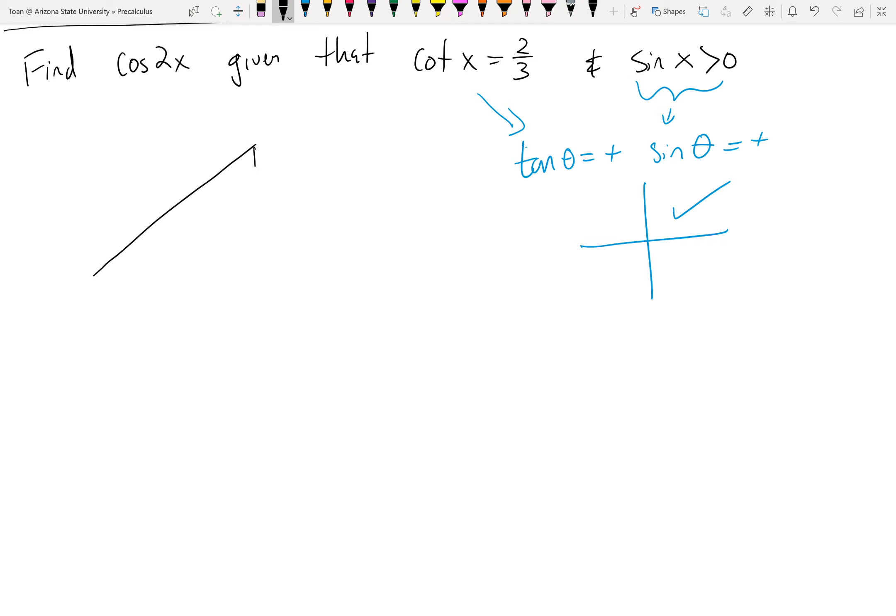So let's go ahead and draw that triangle. I know, according to this piece of information, that in a right triangle where the angle is x, the cotangent, adjacent over opposite, is two over three. So then I can use Pythagorean theorem to figure out the hypotenuse, which is going to be the square root of nine plus four is thirteen.